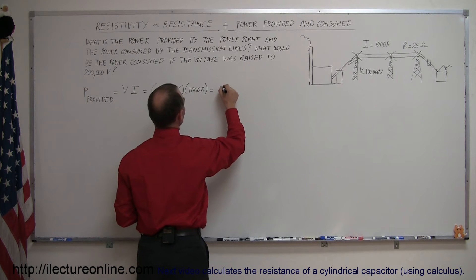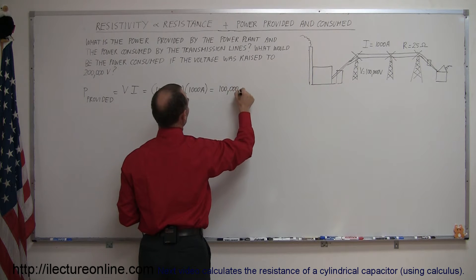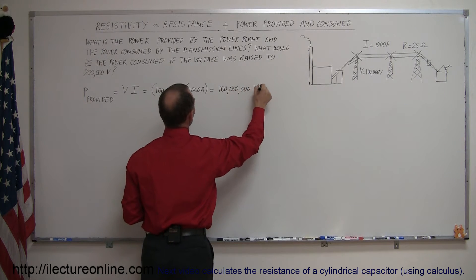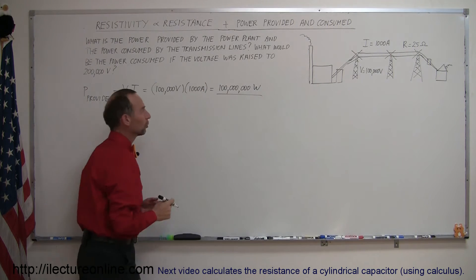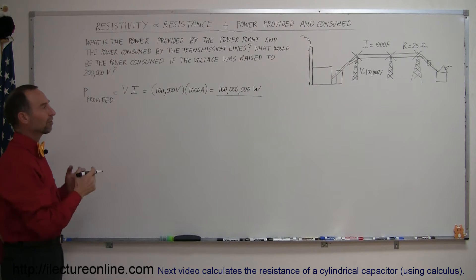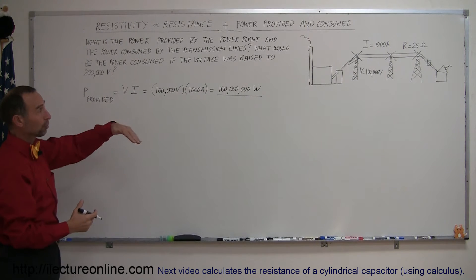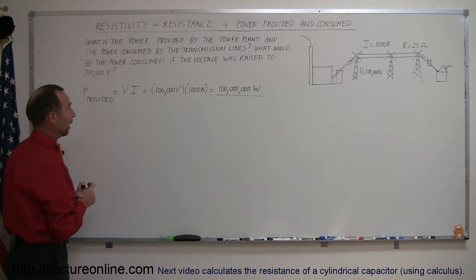And so it would be one hundred million watts because volts times amps is watts. So the factory produces or provides a hundred million watts of power that then gets transported over the high voltage power lines.